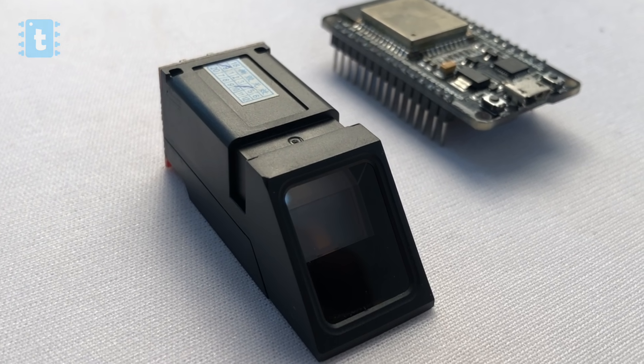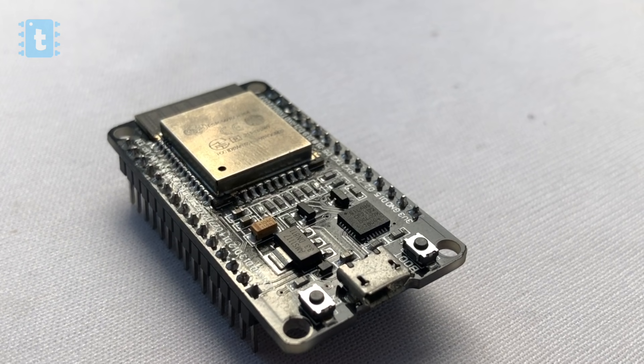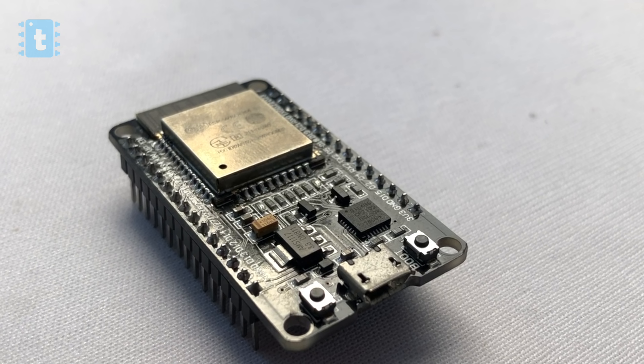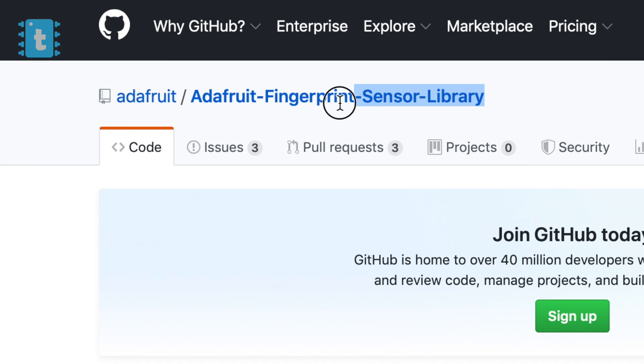For making this project you will need one fingerprint sensor and an ESP32 board. The connections between these two components are shown on screen. To use this fingerprint sensor with the ESP32 board in Arduino IDE, you need to install the Adafruit Fingerprint Sensor Library — I will leave the link in the description.